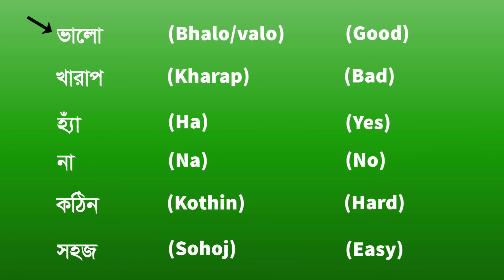Bhalo. Good. Bhalo. Kharap. Bad. Kharap. The first pair of opposites: Bhalo means good, and Kharap means bad.